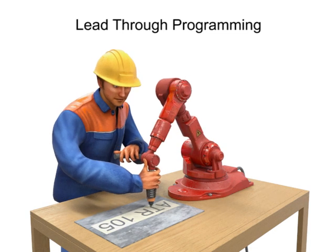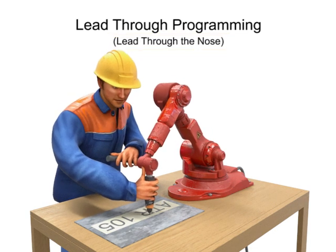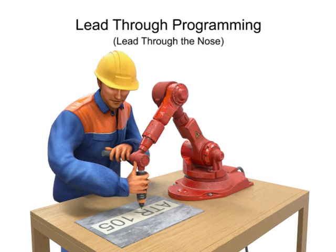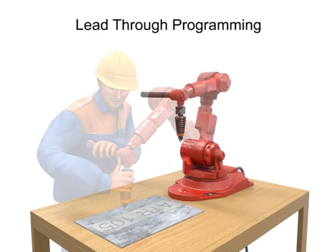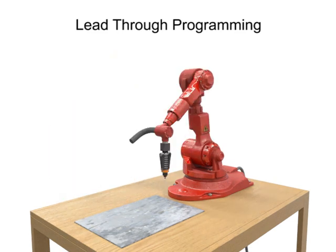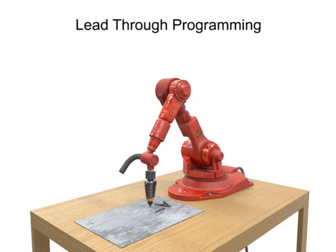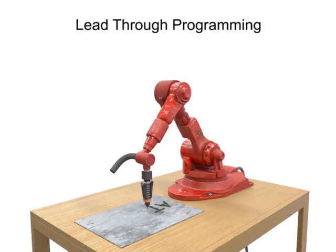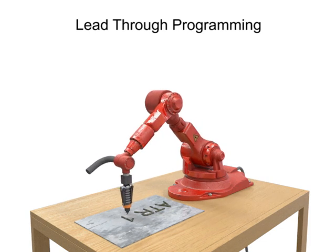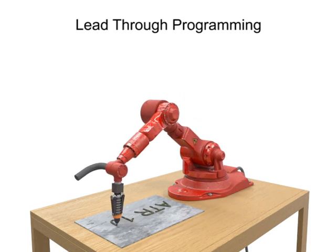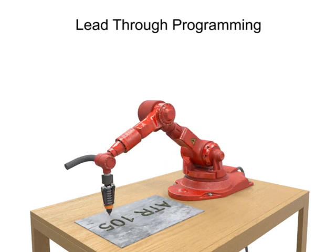This method, also called lead-through the nose programming, is used most often in spray paint and welding applications. It requires very little programming skills and allows experienced technicians to accomplish the work using the robot while the controller records each step. This method typically takes less time to accomplish than teach pendant programming.